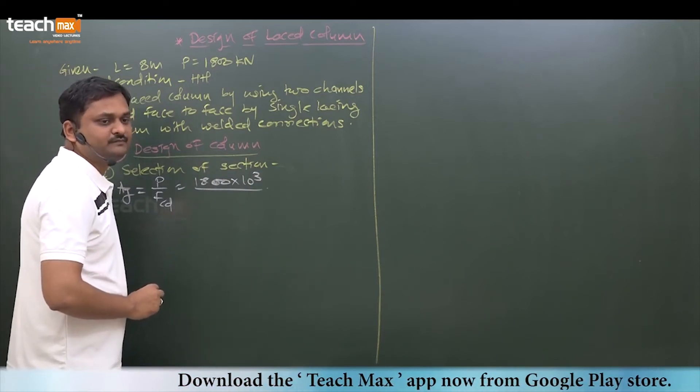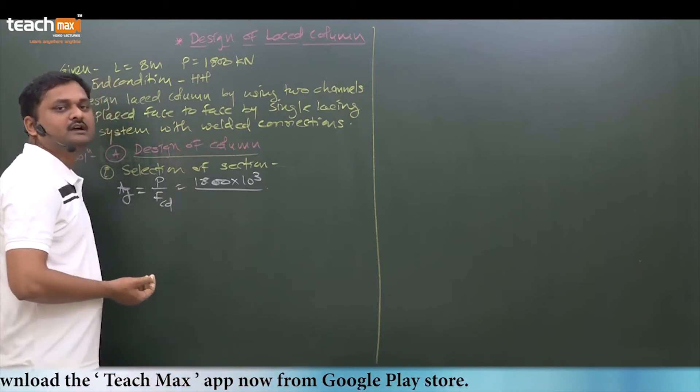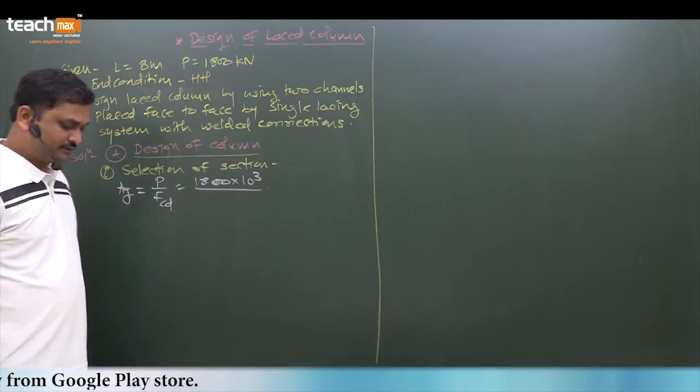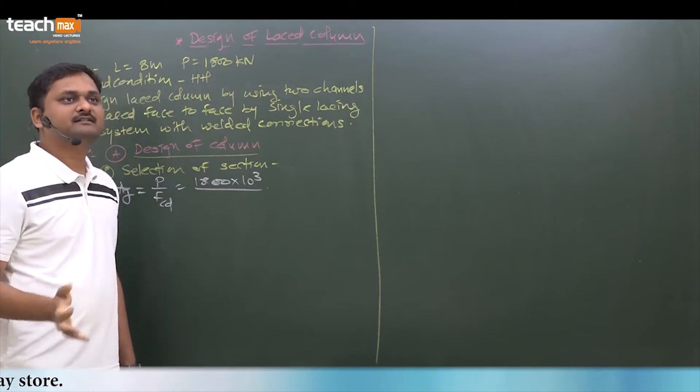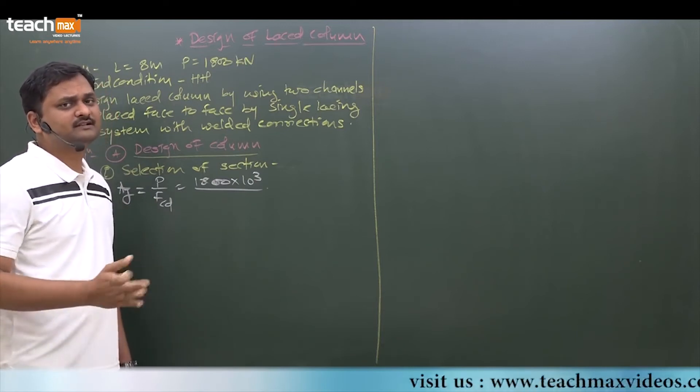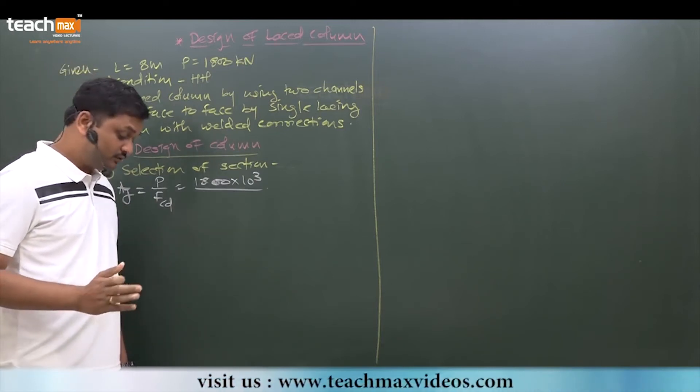fcd. So fcd we can assume. See, how to assume fcd? As I said earlier, for single angle as well as double angle strut, we take - not length, we're discussing about fcd. So fcd we assume in between 60 to 120 MPa.